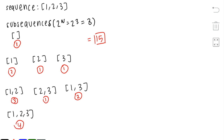However, iterating through all 2 to the power of n possibilities would take way too much time, so we need to think of a way to simplify this.